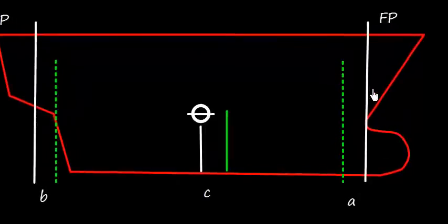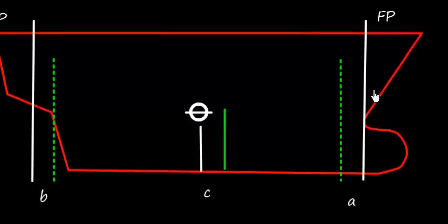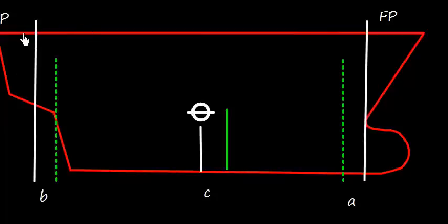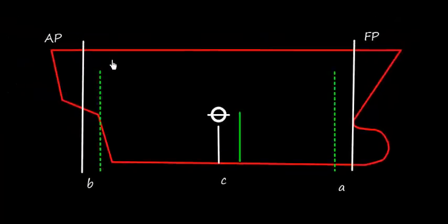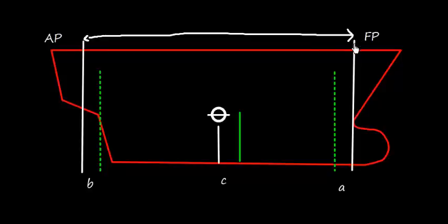Looking at this diagram: distance 'a' is how far the forward draft marks are located aft of the forward perpendicular. For the aft perpendicular, the draft mark is located forward of it. The length between forward and aft perpendiculars is LBP, and the midship mark is not exactly at that midpoint — it can be slightly forward or aft.